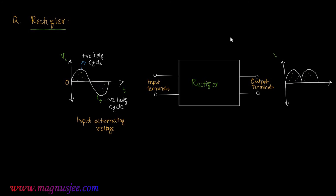This is the input voltage versus time axis, and at the output we get output direct voltage. This is the function of the rectifier, and we can now write down the definition.